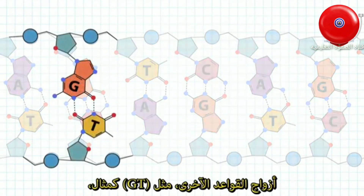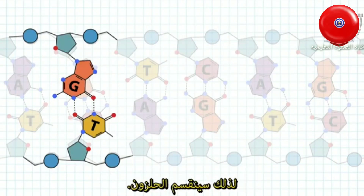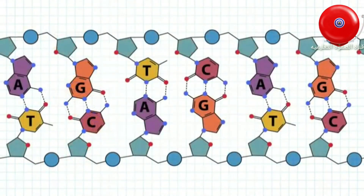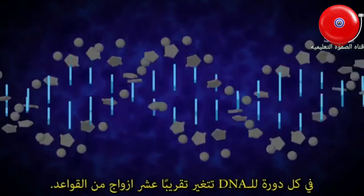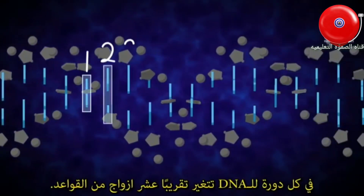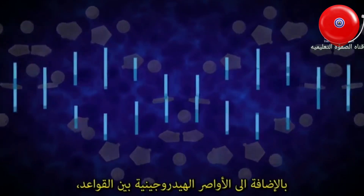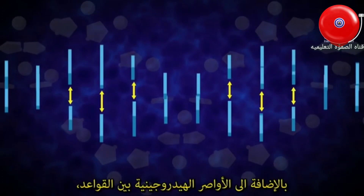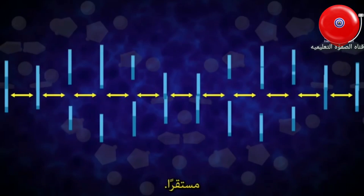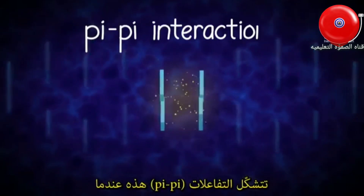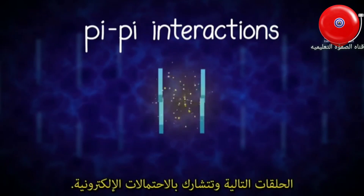Other base pairs, like GT for example, do not have the same geometry, cannot form strong hydrogen bonds, and disturb the helix. The double helix structure of DNA is highly regular. Each turn of the helix measures approximately 10 base pairs. In addition to the hydrogen bonding between the bases, the stacking of the bases also stabilizes the double helix structure. These pi-pi interactions form when the aromatic rings of the bases stack next to each other and share electron probabilities.